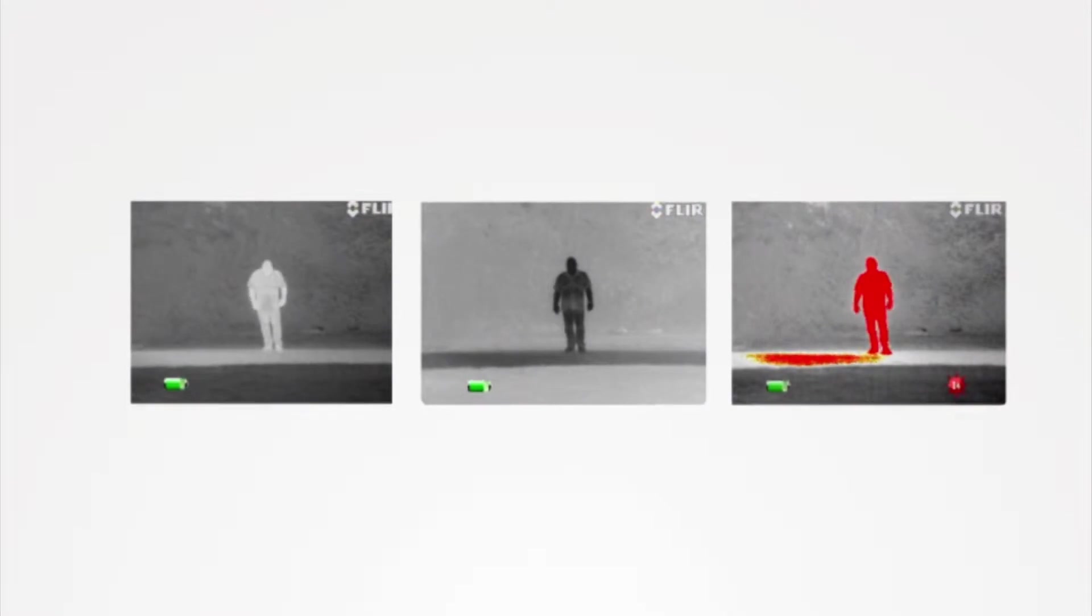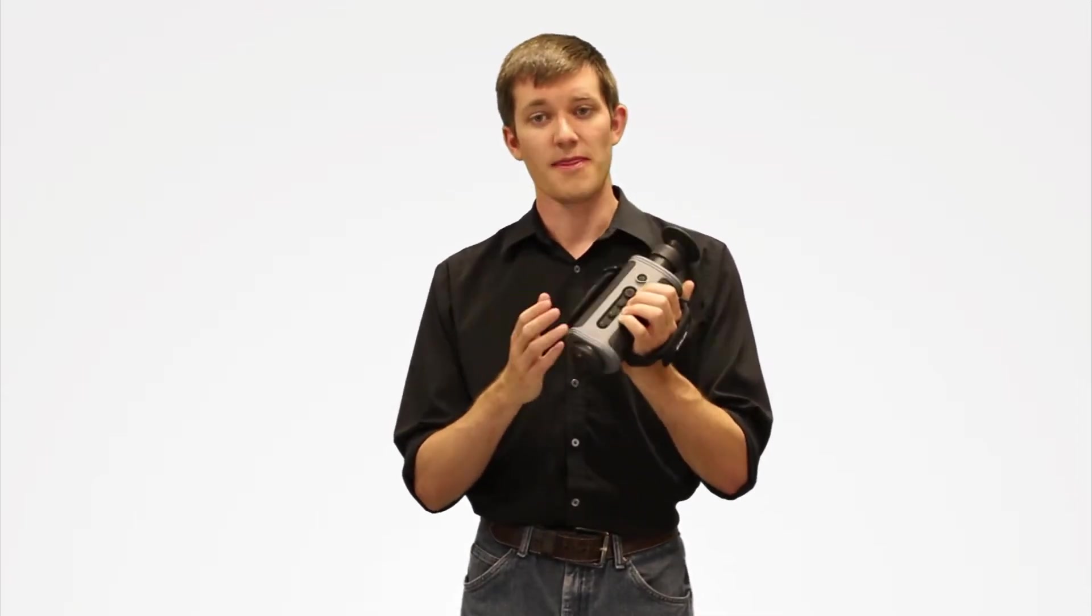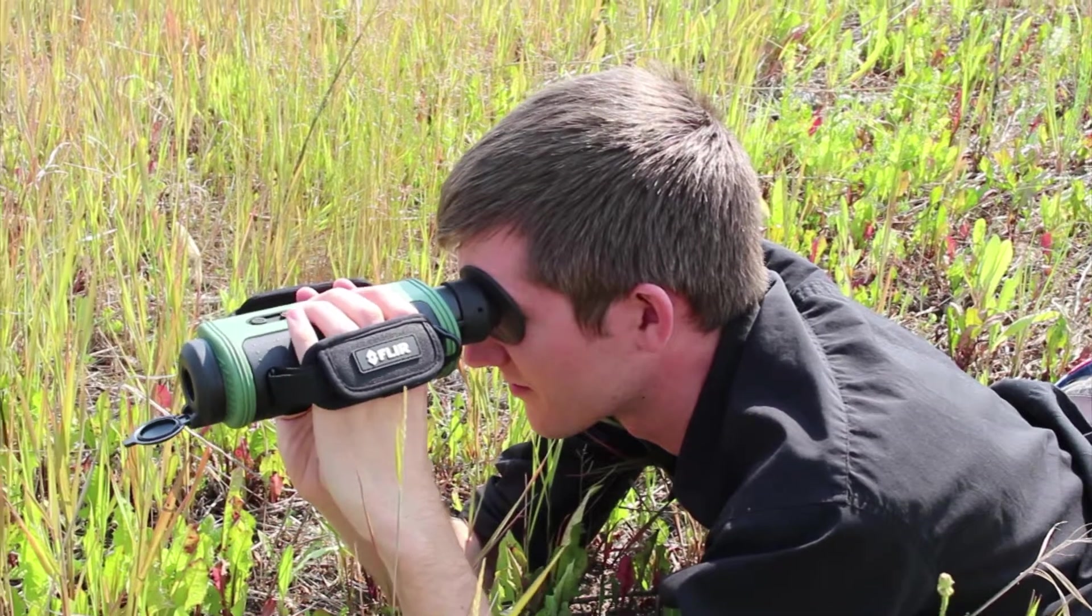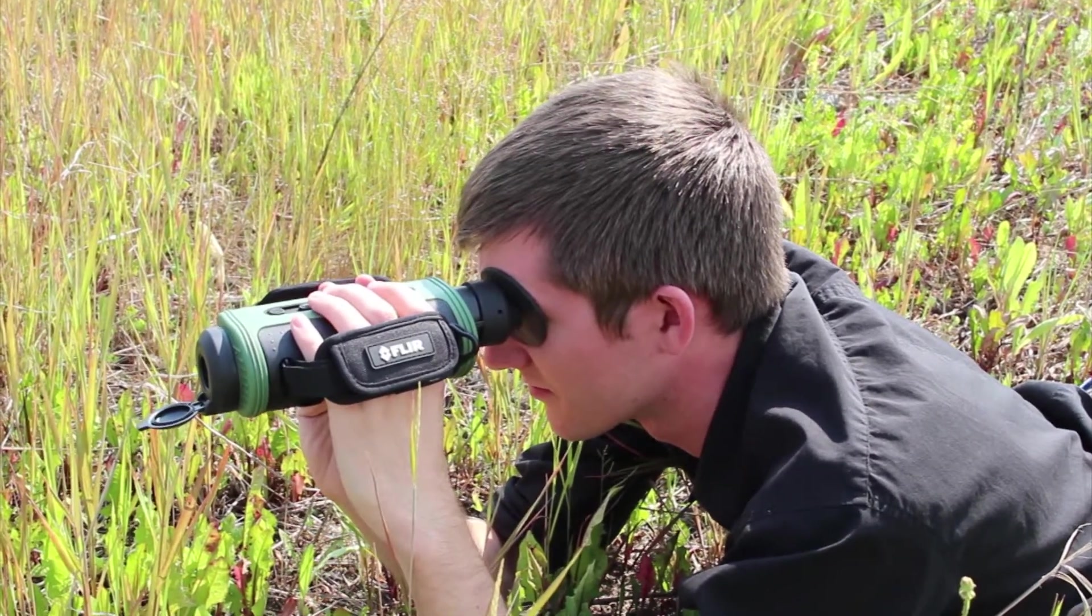Instalert is a FLIR technology that highlights anything you're seeing above a certain threshold in red. You've got a two times digital magnification here to zoom the image closer, and then the pro model of this is able to record photos and videos onto an internal SD card.